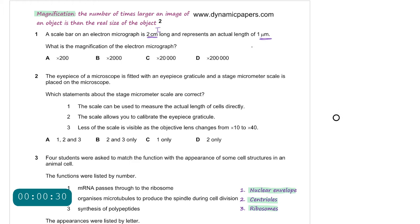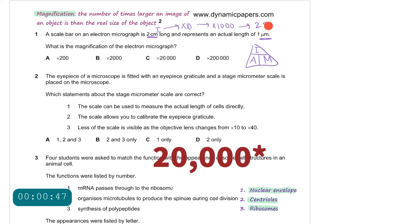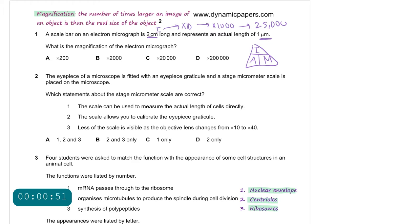The equation for magnification is image size divided by actual size. We convert 2 centimeters into micrometers by first multiplying by 10 to get millimeters, then multiplying by 1,000 to get micrometers, giving us 20,000. So 20,000 micrometers divided by 1 micrometer gives us a magnification of 20,000. Therefore, the answer is C.